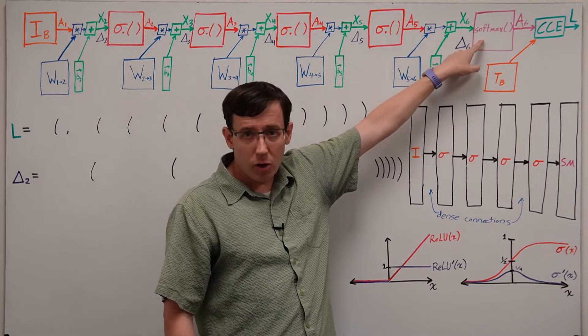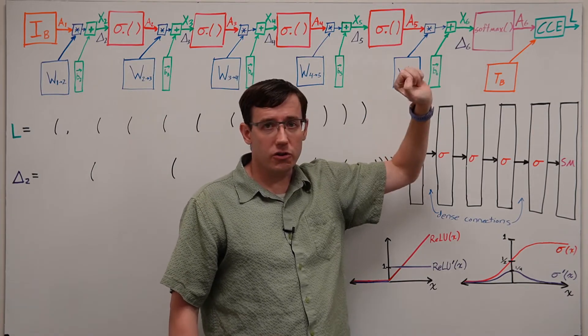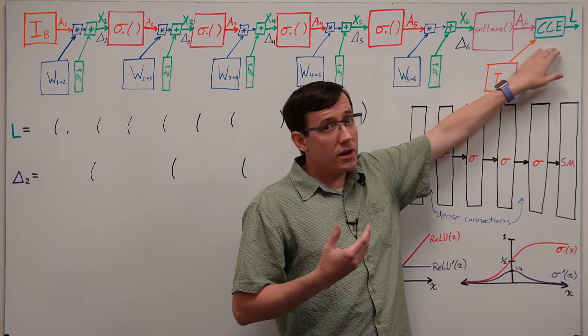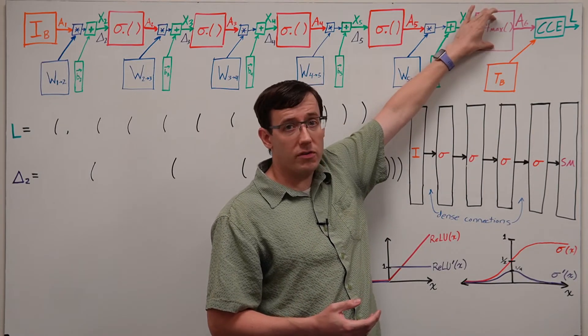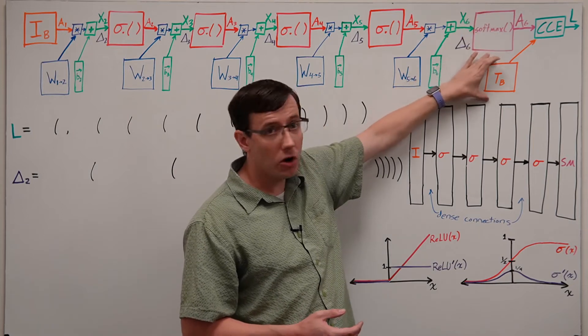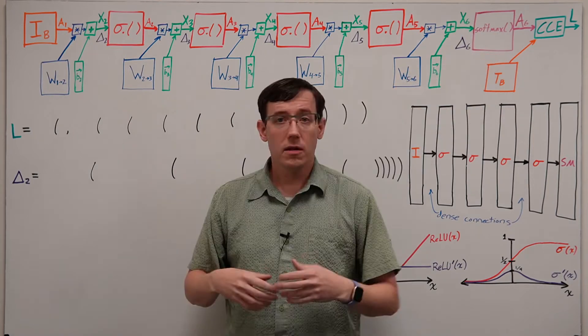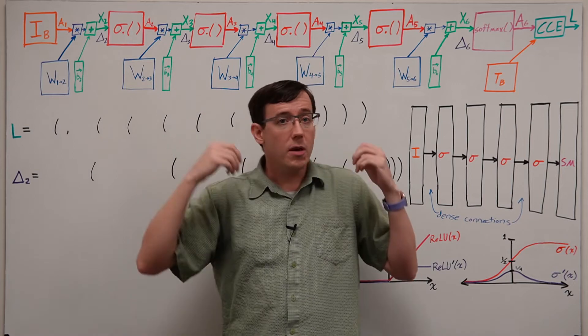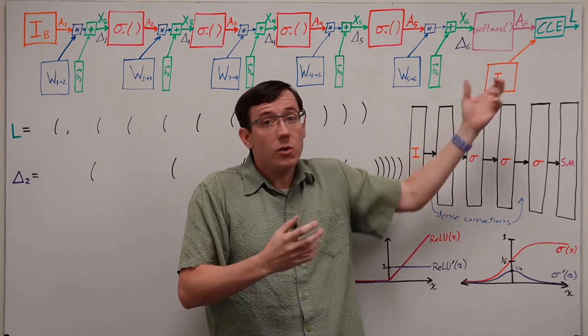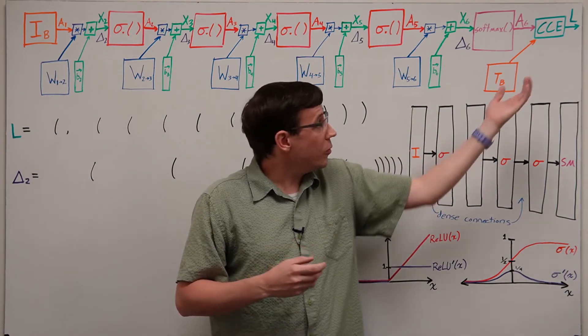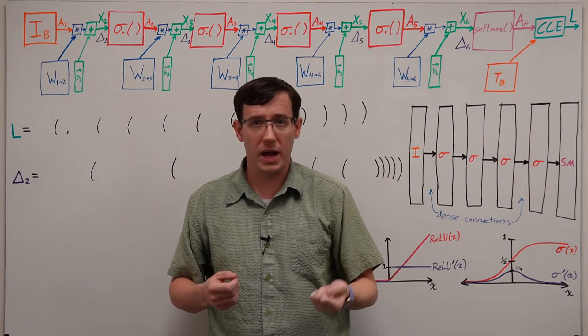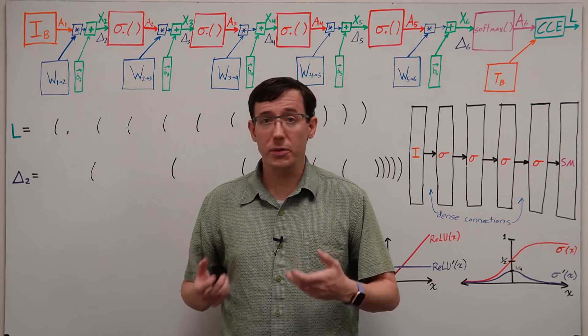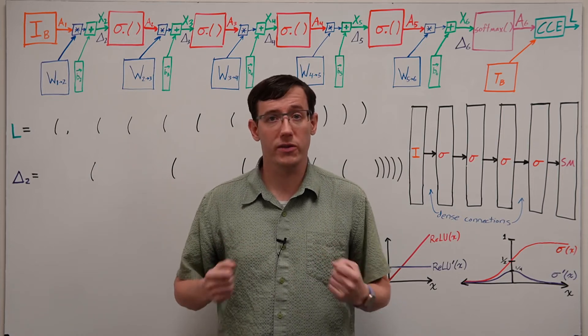When we get to the output layer, the activation function changes to a softmax. And then we can think of the loss as being computed from the activations of the output layer and the targets for this batch. This computational graph makes much more explicit the sequence of operations that we're performing. And it can also make it easier to think about what derivatives we need to take on the backward pass. And so we'll see these computation graphs a lot throughout the rest of the course.